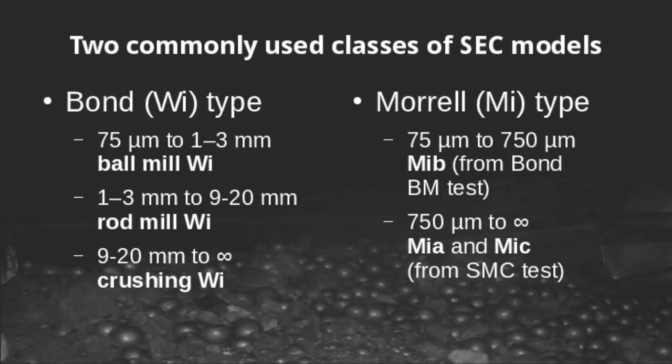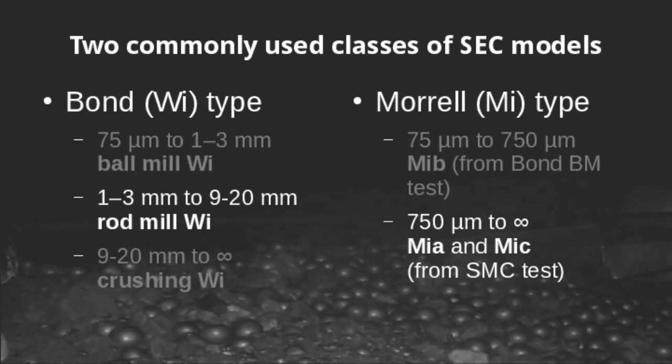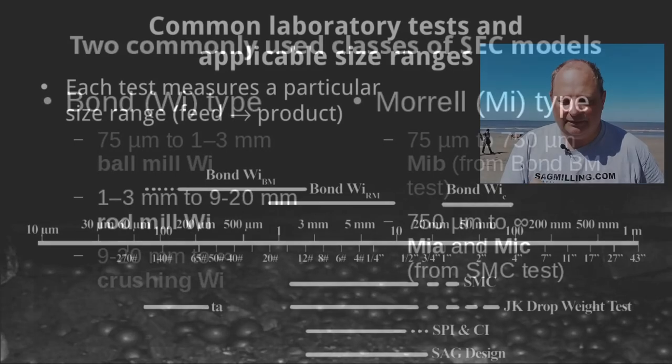In the MI-based modeling you have an SMC test which gives you the coarse and, to a lesser extent, the intermediate sizes. You use an MIB value — derived from the Bond ball mill work index test — to represent the fine size classes. In this video we're specifically looking at the intermediate size class for the Bond series, the rod mill work index, and the SMC test, which includes MIA, DWI, and MIC values.